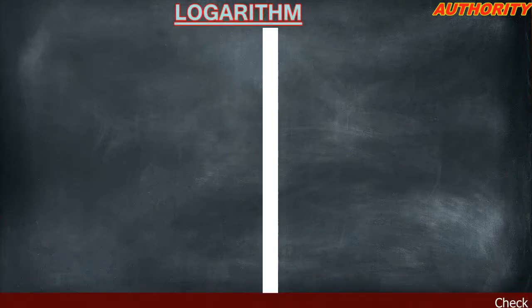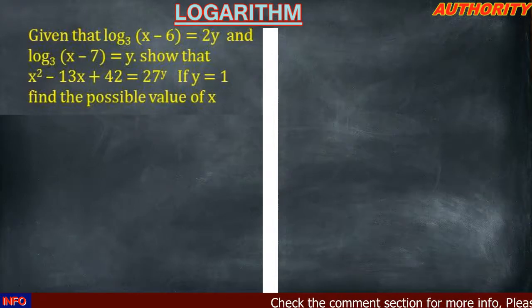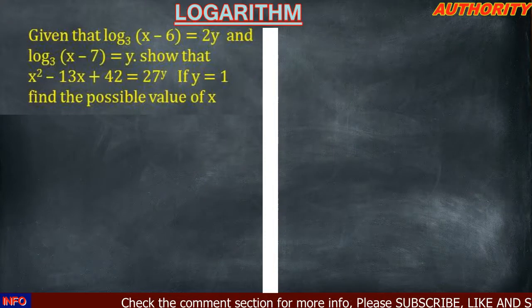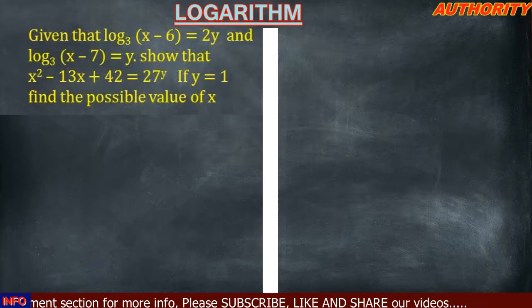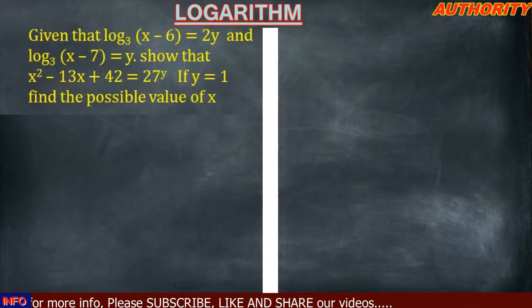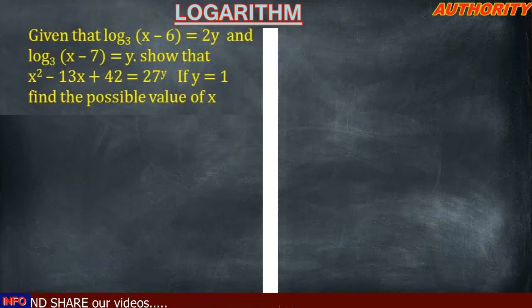Welcome again. Today let's talk about logarithm reading. Given that log(x−6) base 3 equals 2y and log(x−7) base 3 equals y, show that x squared minus 13x plus 42 equals 27 raised to power y. Part two: if y equals 1, find the possible values of x.